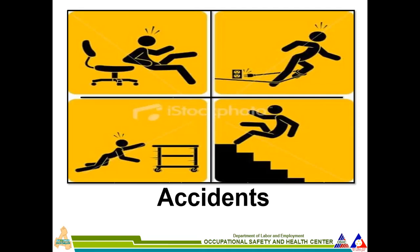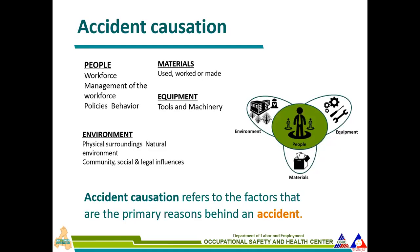Other examples include improper sitting or a broken chair, unsafe placement of power cords that can cause tripping, pushing a trolley and tripping over it, and walking backwards on stairs without noticing the step down. These are just a few examples of how accidents can occur in the workplace.